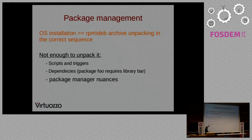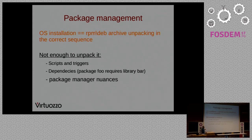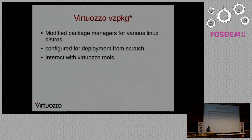In general, installation is RPM, DEB, archiving, and packaging in the correct sequence, with executing scripts and triggers, and unpacking in the right order — for example, package foo requires library bar. In addition, there are special package manager nuances, like what is hard-coded in RPM: RC files, scriptlets, et cetera.